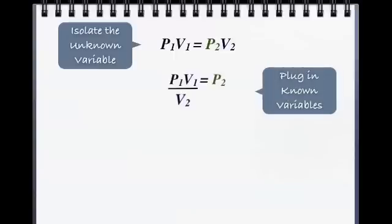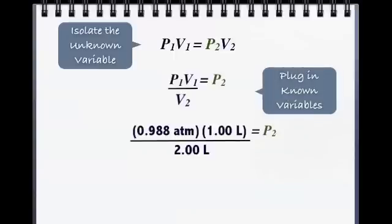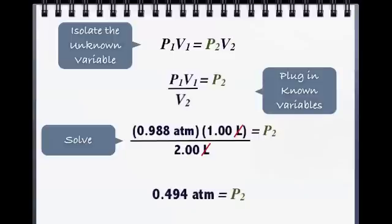Then, plug in your known variables, which are 0.988 atm for P1, 1.00L for V1, and 2.00L for V2. In order to solve, cross out your canceling units, which are liters, and you're left with your final answer of 0.494 atm as your P2.